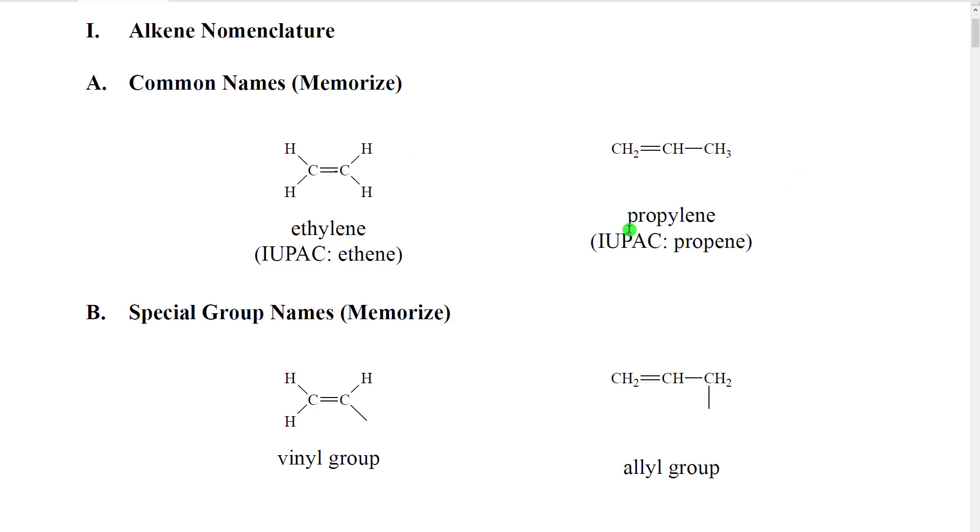Related to ethylene is propylene, a three-carbon alkene. And again, we have an extra Y-L compared with the IUPAC, which would just be propene. These names are still widely used because these are important building blocks for a variety of industrial processes. You may, for example, have heard of polyethylene, which is a type of plastic made from ethylene itself.